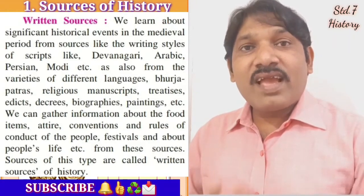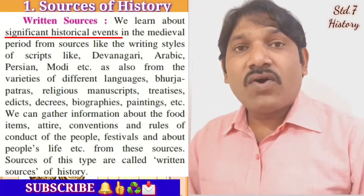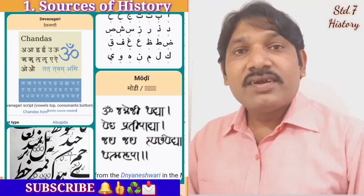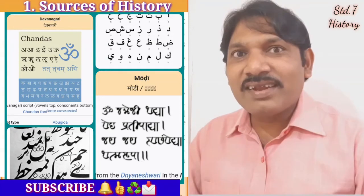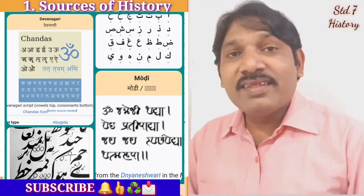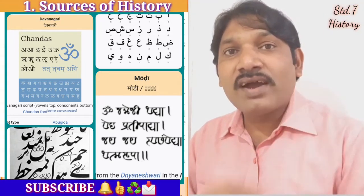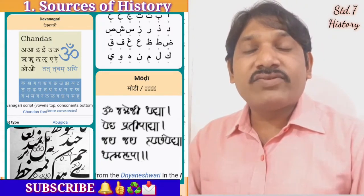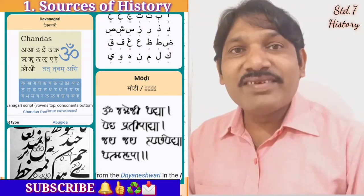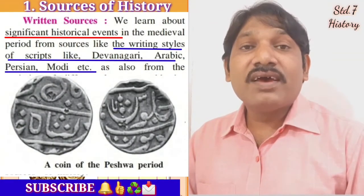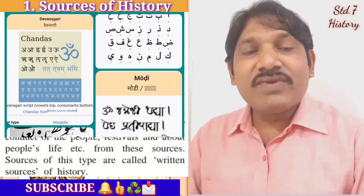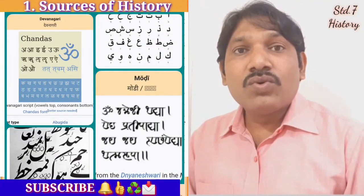We can learn about significant historical events from different types of sources. For example, writing styles of scripts like Devanagari — we write Marathi, Hindi, and Sanskrit in Devanagari script. So we can understand what kind of script was used in the historical period. Along with Devanagari, we can also understand Arabic, Persian, and Modi writing styles. Previously we studied that the Peshwas used Arabic language on their coins, so we can understand their historical events.